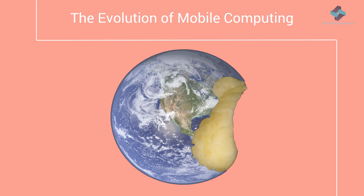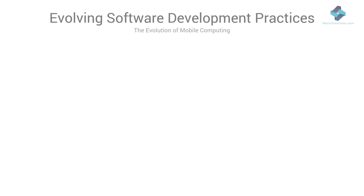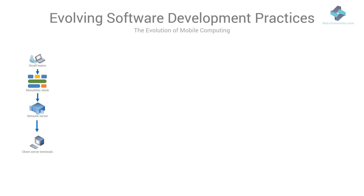Let's explore the implications of this advancement by looking at the evolution of computing. Over the years, software development has seen a paradigm shift. From the beginning of the computing era in the 1960s up to the late 1990s, software was built by relatively small teams using large monolithic software stacks to build relatively simple and smaller applications used by one to a few tens of people. These applications were deployed on a central network server which users connected to via terminals using proprietary protocols.